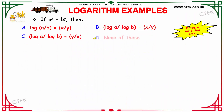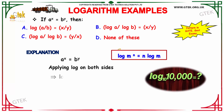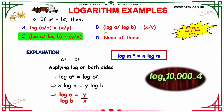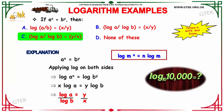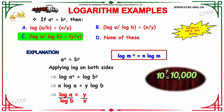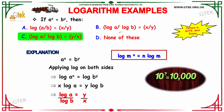We have another interesting question which has appeared in GATE and government exams. If the value of a to the power x is equal to b to the power y, then which of the following conditions will hold? The options are: log a by b equals x by y; log a by log b equals x by y; log a by log b equals y by x; or none of these.